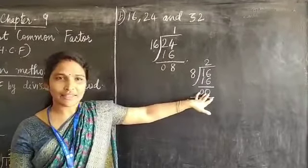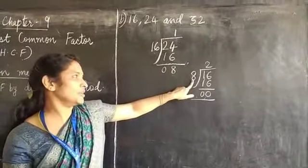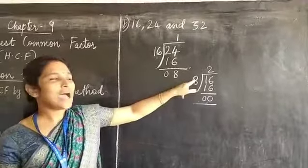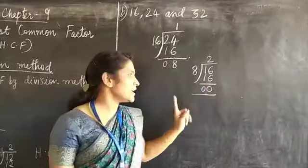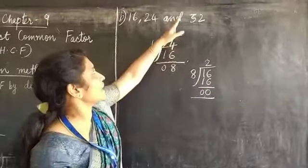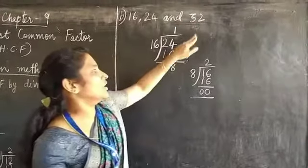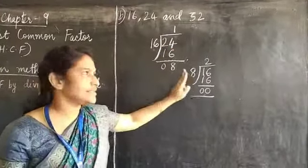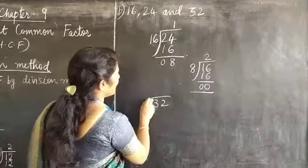Then what will be the HCF of these numbers? 8 will be the HCF of this number, because the last divisor will be the HCF of these numbers. Now we have done only with two numbers. Let's try with the third number also. We are going to divide the third number with this same HCF.